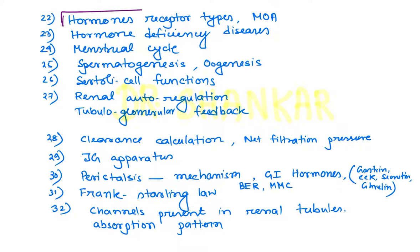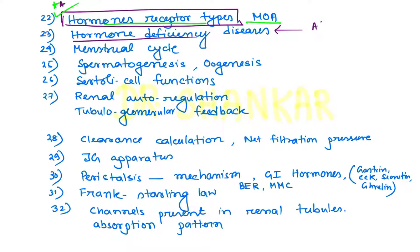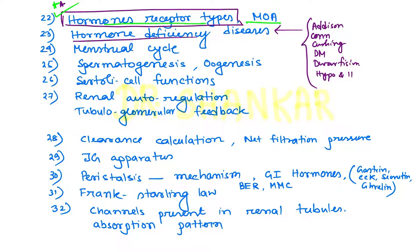From endocrinology, the first very important topic is hormone receptor types. The receptor responsible for different hormone actions — JAK-STAT pathway, tyrosine kinase pathway, cAMP, cGMP, IP3/DAG pathway — different pathways responsible for hormone action and their receptors is a very important, repeatedly asked topic. Mechanism of action of hormones, then different hormone deficiency diseases like Addison's disease, Conn's disease, and hormone excess diseases are also important: Cushing's syndrome, diabetes mellitus, dwarfism, hypothyroidism, hyperthyroidism — these disease topics with hormone function questions are important.